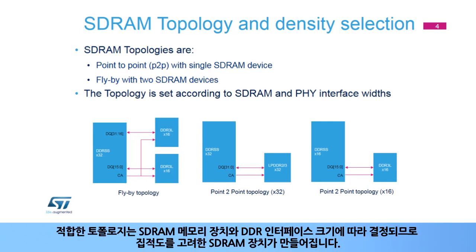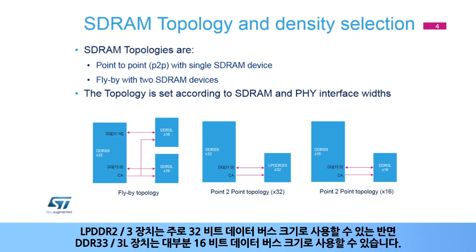The suitable topology is determined by the SDRAM memory device and the DDR interface width, resulting in a number of SDRAM devices considering their density. LPDDR2 or 3 devices are mostly available with 32-bit data bus width, while DDR3 or 3L devices are mostly available with a 16-bit data bus width.